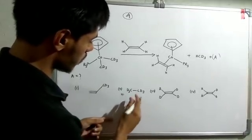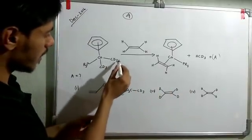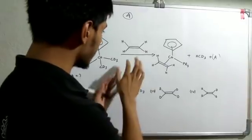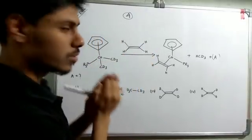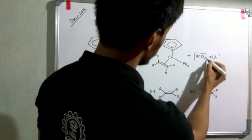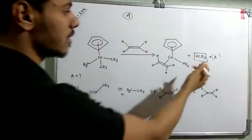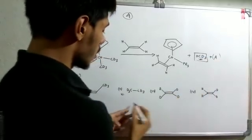You can see these options are given. The second option shows this is the product of reductive elimination of this complex and then this alkene goes on to this complex. But you have to also take care about this HCCd3, so if this is the reaction you cannot explain the formation of this. So this option goes.